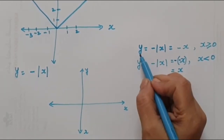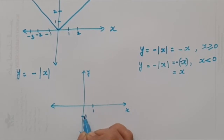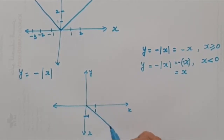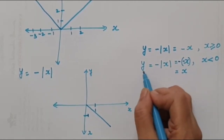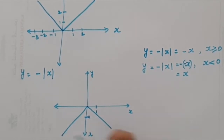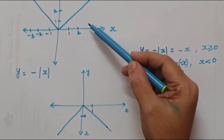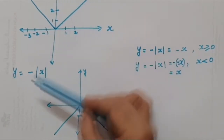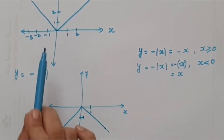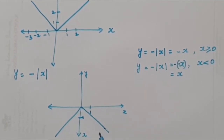For all x greater than 0, y = -x, so we draw the graph of y = -x in the positive x region. For the negative x values we have the graph of y = x. We can also see the relation through transformations: the graph of y = |x| and y = -|x| will be a reflection of each other along the x-axis.